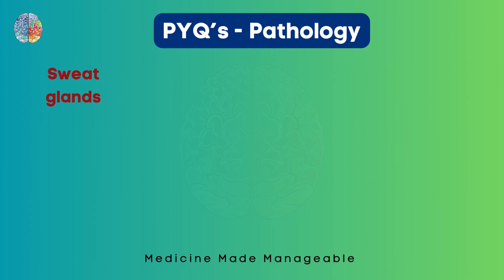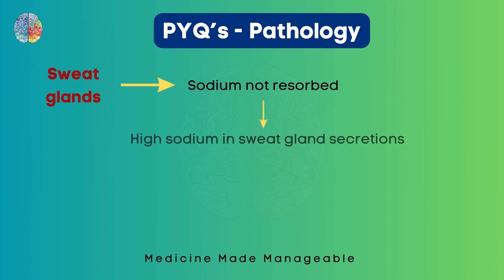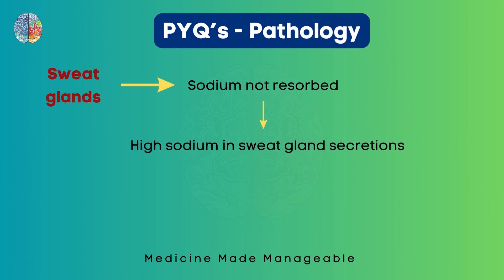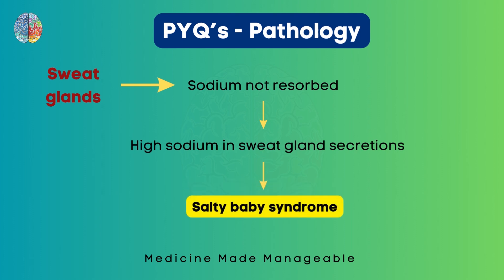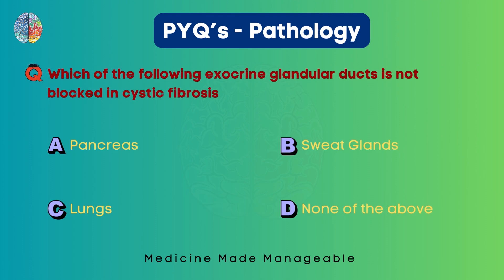But in the sweat glands, this actually does not happen. Something different occurs here — sodium is not able to be reabsorbed from the secretions. So there is high sodium in the sweat gland secretions, which leads to a condition called salty baby syndrome. So the correct answer here is sweat glands.